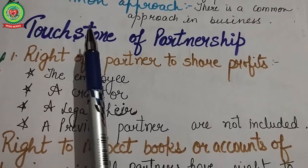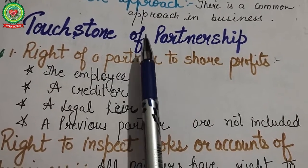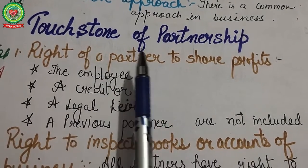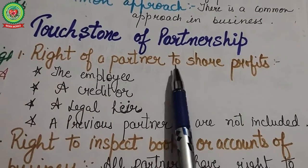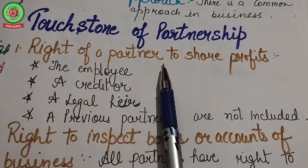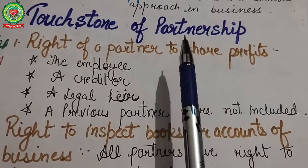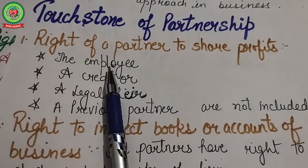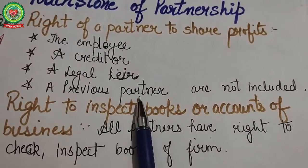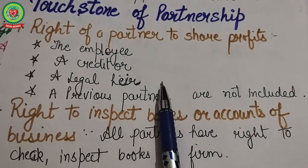Our next topic is touchstone of partnership, for which we can apply the following tests. First is the right of a partner to share profits: every partner has the right to share profits in the partnership. However, some persons are not treated as sharing profits — such as an employee, a creditor, a legal heir, or a previous partner.